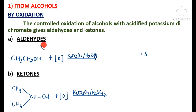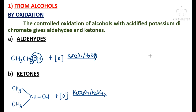Aldehydes are prepared from primary alcohols. I have taken ethyl alcohol. This ethyl alcohol undergoes oxidation in the presence of acidified potassium dichromate — that means potassium dichromate in the presence of sulfuric acid. One hydrogen from this carbon and the next hydrogen will be removed as a water molecule, and finally we will be getting acetaldehyde, CH3CHO.